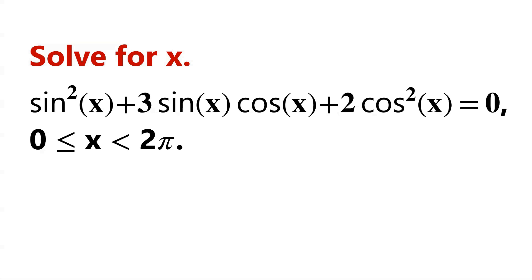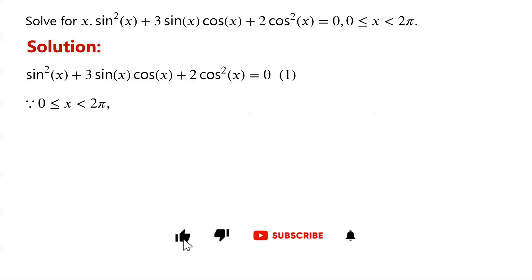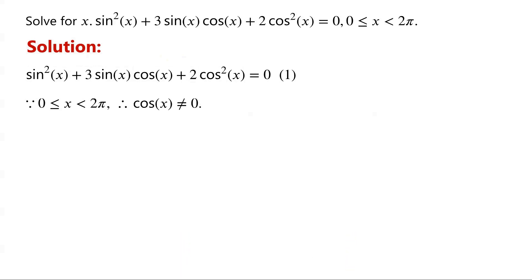Solve this trigonometric equation, where x is greater than or equal to 0 and less than 2 pi. We label the equation as equation 1. Because x is greater than or equal to 0 and less than 2 pi, cosine of x does not equal 0.